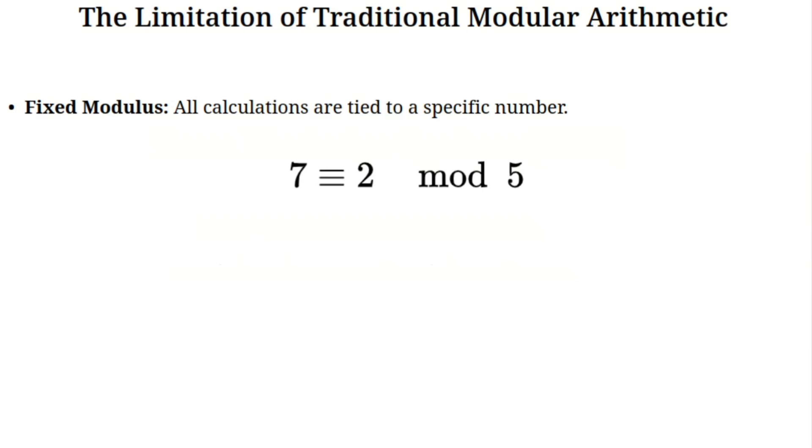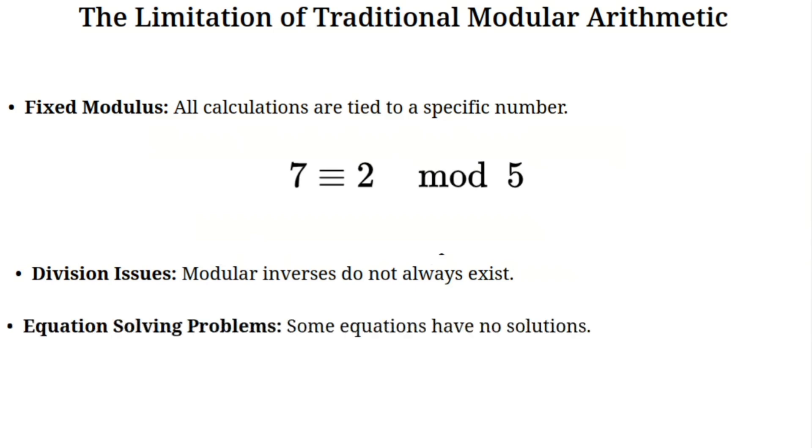One, you always need a fixed modulus. If you change the modulus, the entire system changes. This makes calculations inflexible and tied to a specific number. Two, division doesn't always work. In modular arithmetic, division is only possible when a special number called the modular inverse exists. But sometimes these inverses don't exist at all.